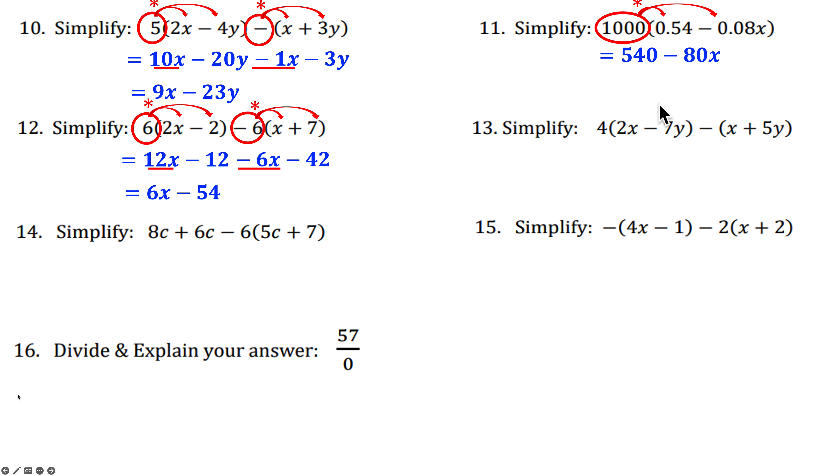All right. 13. Distribute the 4. 8X minus 28Y. Distribute the minus sign. Minus X minus 5Y. Combine like terms. We're going to get 7X and a minus 33Y.